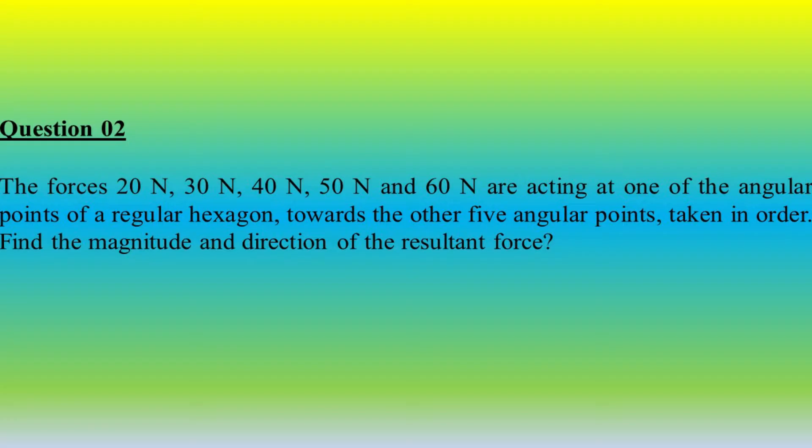Question 1: The forces 20N, 30N, 40N, 50N, and 60N are acting at one of the angular points of a regular hexagon, towards the other 5 angular points taken in order. Find the magnitude and direction of the resultant force.